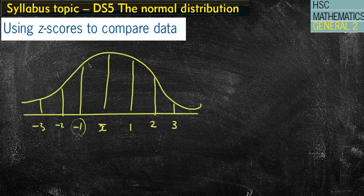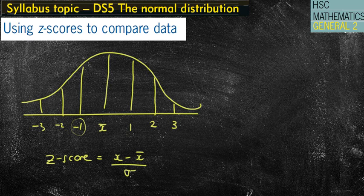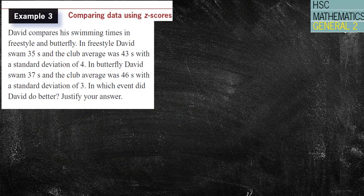So a z-score of minus 1 was one standard deviation below the mean. Another way to find the z-score, if we remember, is the score subtract the mean and then divide it by the standard deviation. And the higher the z-score, the better the score is going to be. Let's look at a question.